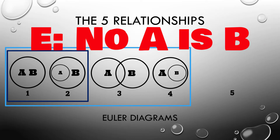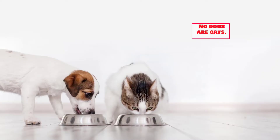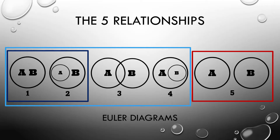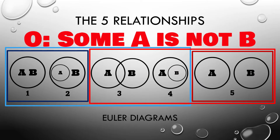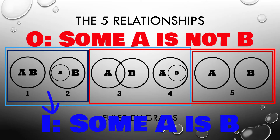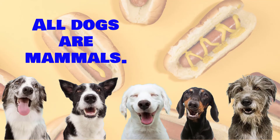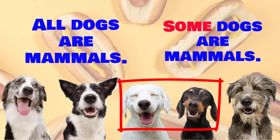An E proposition — no A is B — is illustrated with a fifth diagram: two completely separate circles, like 'no dogs are cats.' An O proposition — some A is not B — is already illustrated with diagrams three through five. Note that the quantifier 'some' can apply to any amount of a class, up to and including the entire class. So if all dogs are mammals, it's also true that some dogs are mammals — and that makes perfect sense.